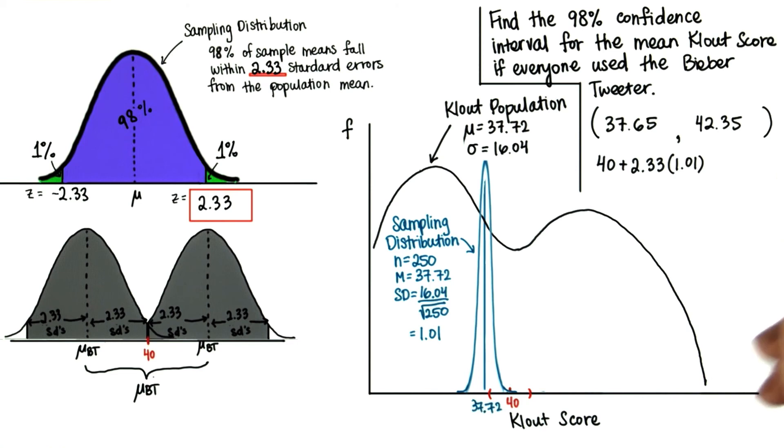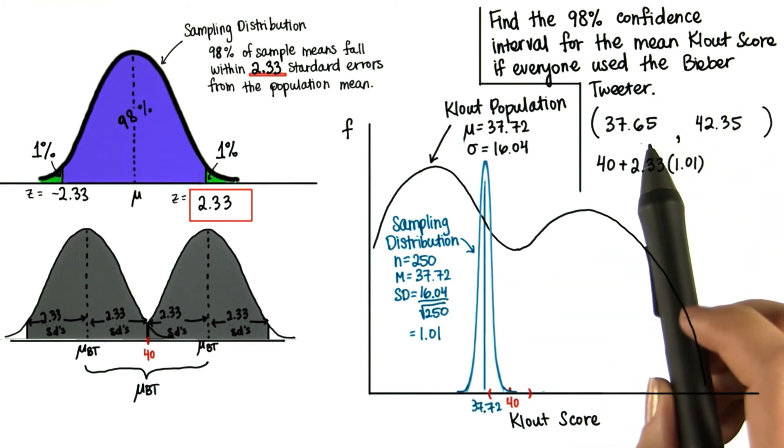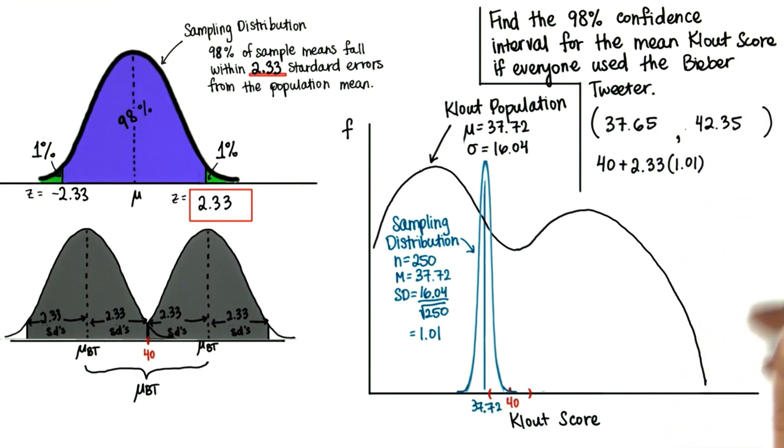Recall that before, the 95% confidence interval was from 38.01 to 41.99. So it was a little smaller than this. Good job.